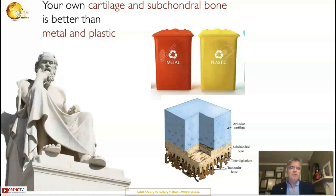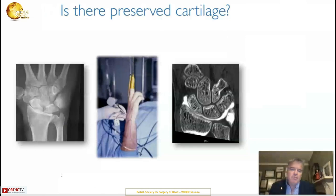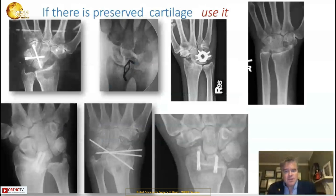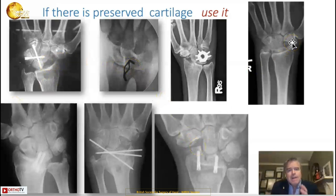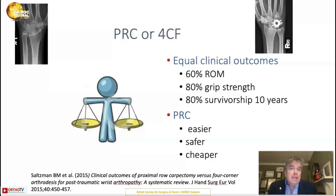Preserving the cartilage: surely it's better to use your own cartilage and subchondral bone than a bit of plastic and metal. In wrist surgery, if we can find with arthroscopy, X-ray, CT arthrogram, or high-quality MRI that there's still cartilage left, then we can do some sort of operation — a four-corner fusion, radial lunate fusion, radioscapholunate fusion, or proximal row carpectomy — where we keep as much cartilage as we can and only fuse out the bits we don't need. Four-corner fusion and proximal row carpectomy give equivalent results to each other, and it's best to go for a PRC if the midcarpal joint is preserved, because they have good outcomes and it's a safer operation.